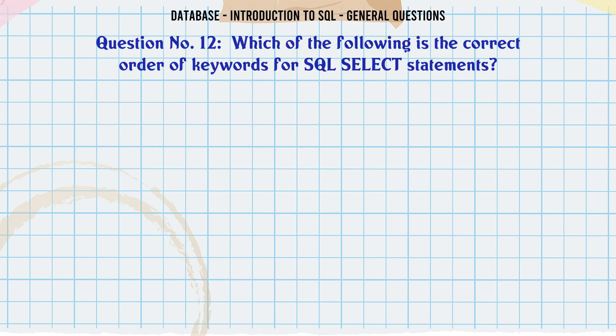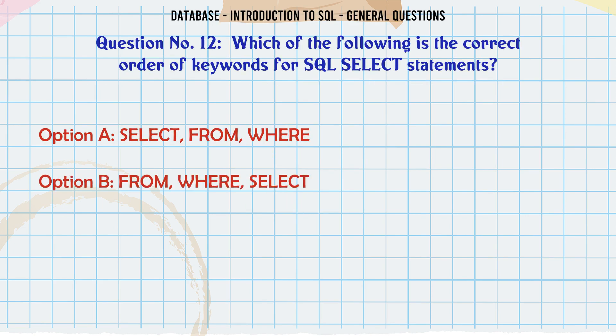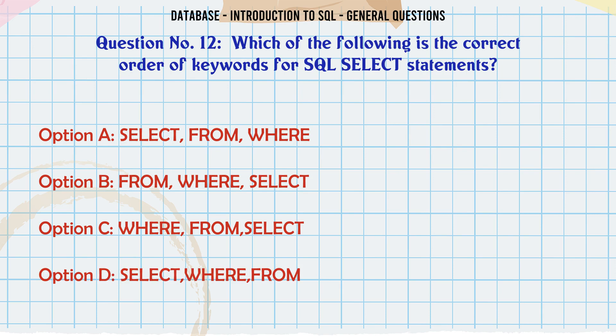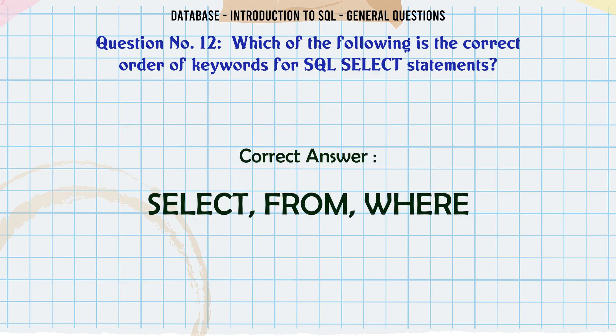Which of the following is the correct order of keywords for SQL SELECT statements? A. Select from where. B. From where select. C. Where from select. D. Select where from. The correct answer is: Select from where.